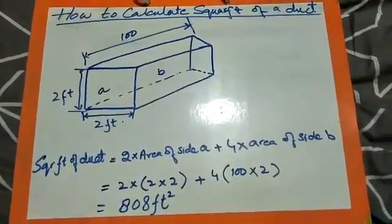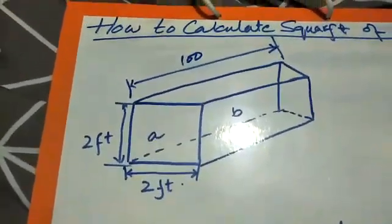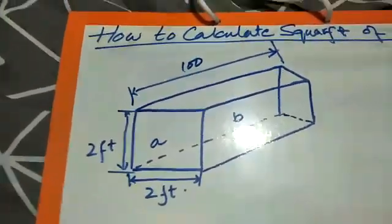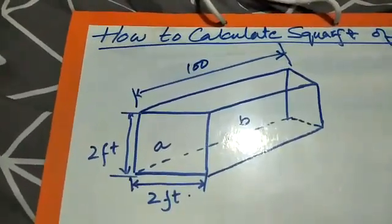As we look at the duct, this duct is a square box of 2 feet by 2 feet, and the length of this duct is 100 feet. Now we have to calculate the square feet of this duct.